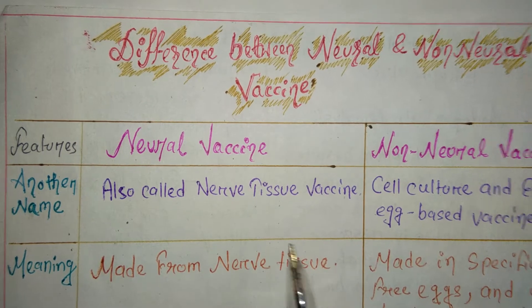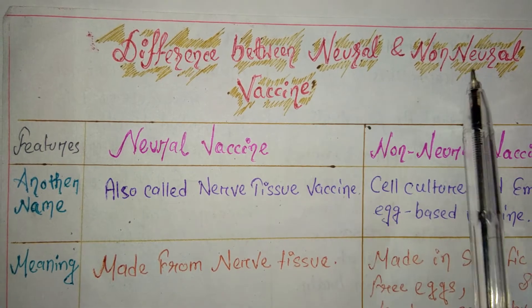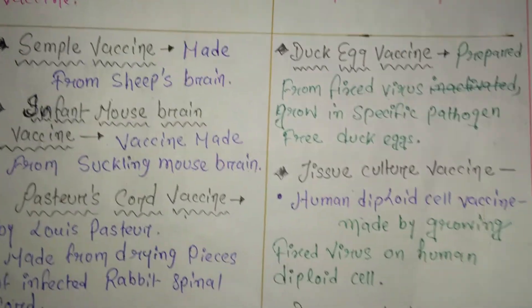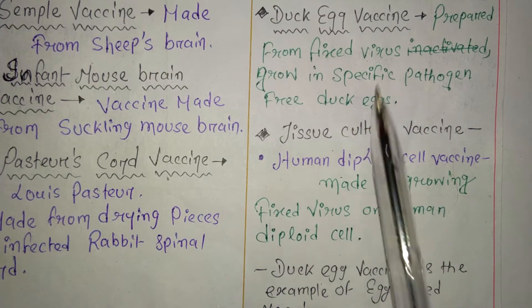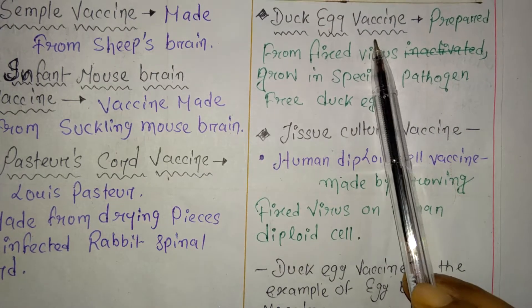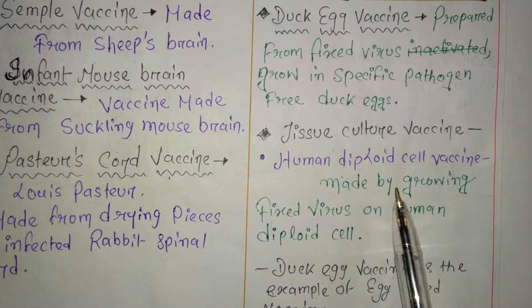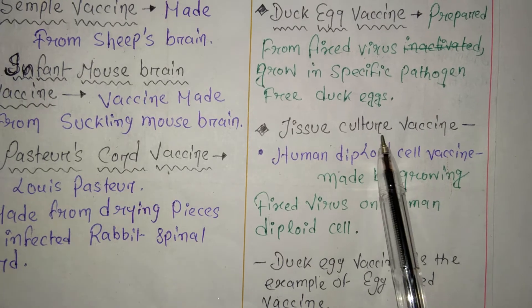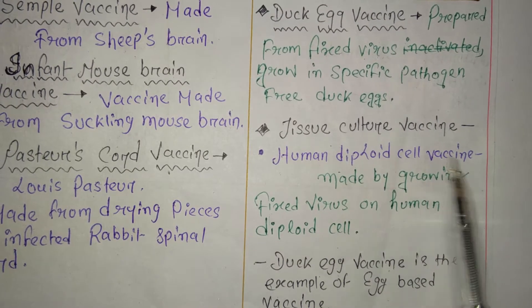Let's continue the topic of differences between neural and non-neural vaccines. We studied the duck egg vaccine as an example of non-neural vaccine. Now we will study tissue culture vaccine — let's look at an example of tissue culture vaccine, which is the human diploid cell vaccine.